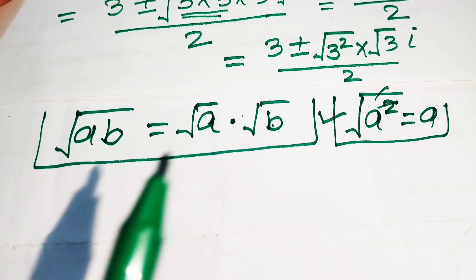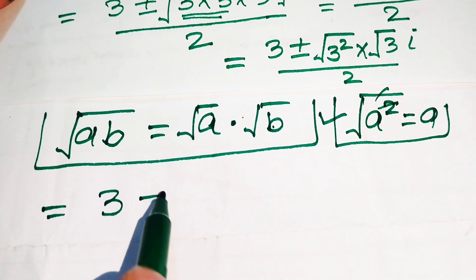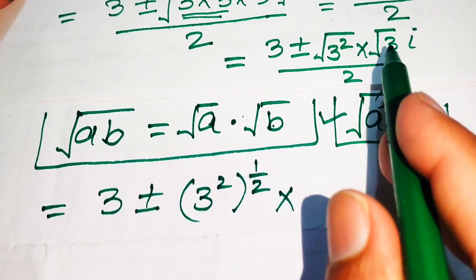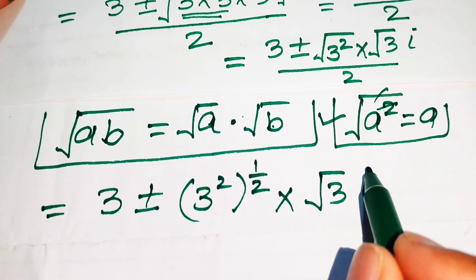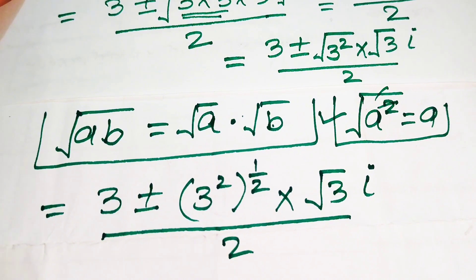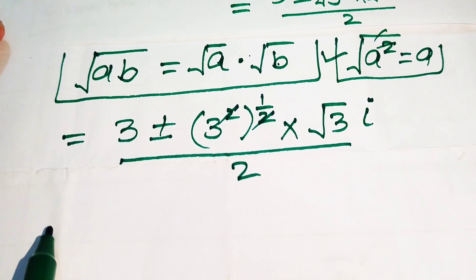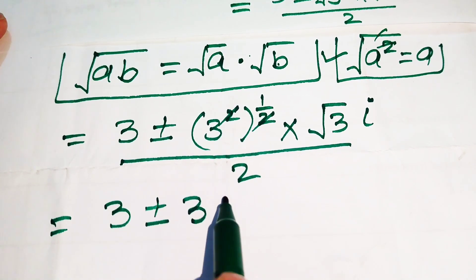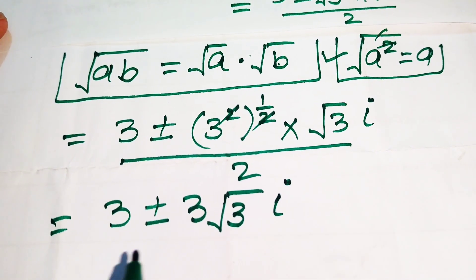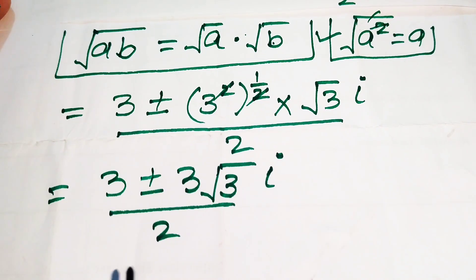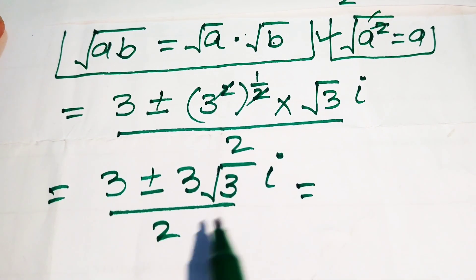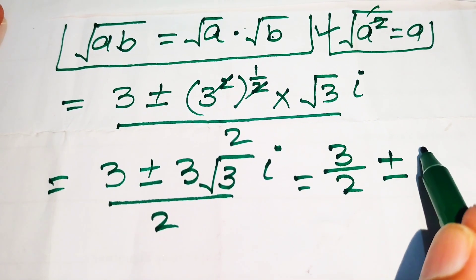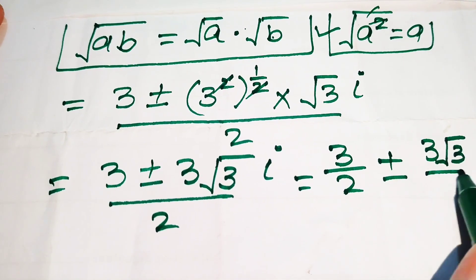Converting to exponential form and simplifying: the expression becomes (3 plus or minus 3 to the power of (2 times 1/2) times square root of 3 times i) divided by 2. The exponents 2 and 1/2 cancel, giving (3 plus or minus 3 times square root of 3 times i) divided by 2.